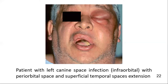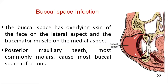Infections may follow the extension of the buccal space into the infraorbital space, the periorbital space, the infratemporal space, and the superficial temporal space. The buccal space is bounded superficially by the overlying skin and subcutaneous tissue, and deeply by the buccinator muscle.